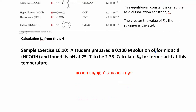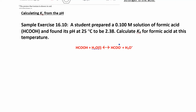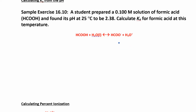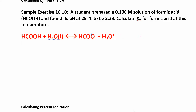Since Ka is an equilibrium constant, we're going to go back to ICE tables. In this problem, we have formic acid — a student prepared a 0.1 molar solution and the pH was found to be 2.38. We need to calculate the Ka. The first thing you want to do is write the Ka expression: products over reactants.